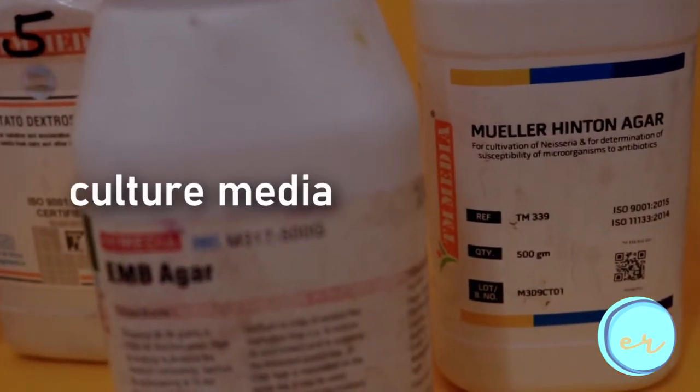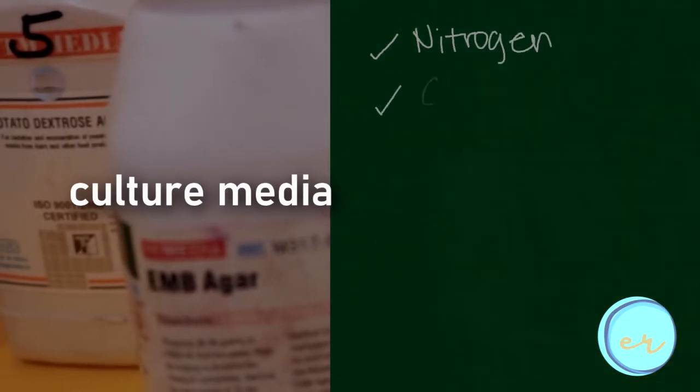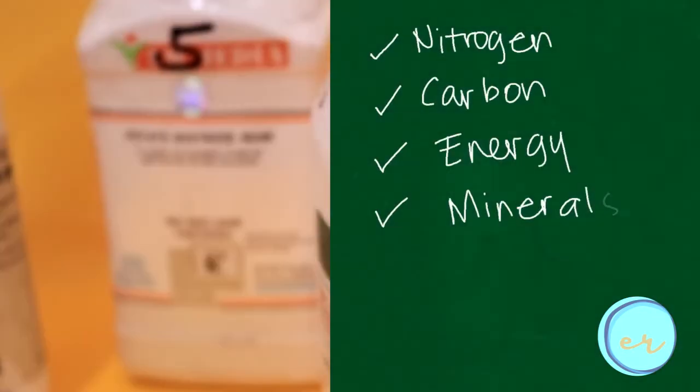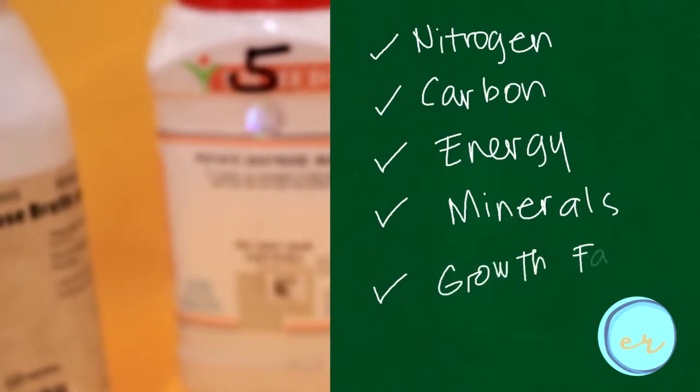The chemical compounds in a culture medium can be grouped as nitrogen sources, carbon sources, energy sources, minerals, and growth factors.